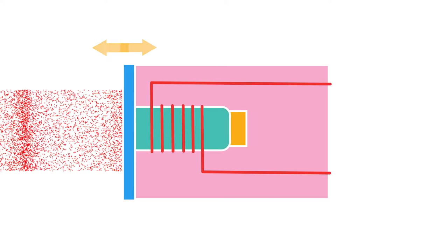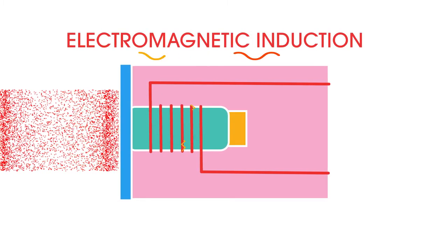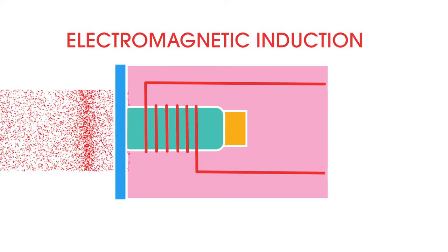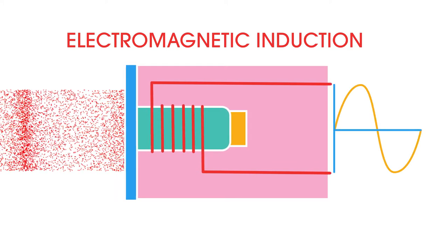An incoming longitudinal sound wave causes the membrane to move backwards and forwards. This moves the solenoid to and fro over the magnet. This generates a small electrical current in the wire coil by electromagnetic induction. As the wires of the solenoid cut through the magnetic field lines, electrons are made to move.